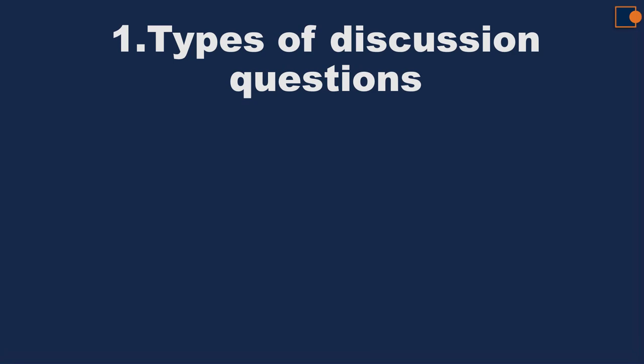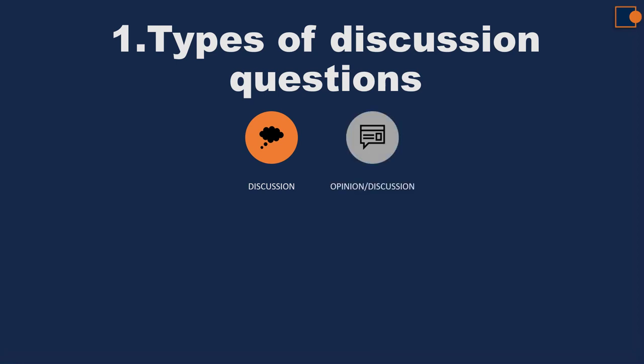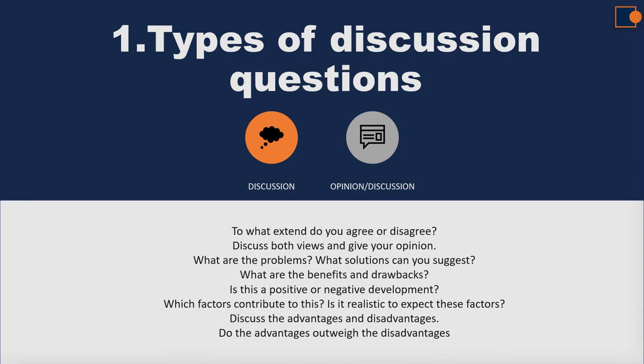There are two types of questions when it comes to discussion-related questions in task 2. First is purely discussion questions, second is opinion and discussion where you need to discuss two views and at the same time give your personal opinion. The purely discussion type includes questions like 'what are the benefits and drawbacks' and 'discuss the advantages and disadvantages.' In these types of questions you only need to discuss pros and cons.